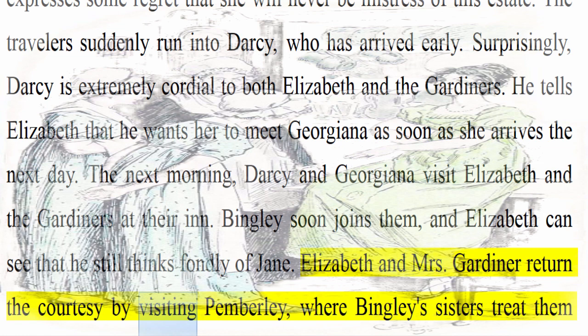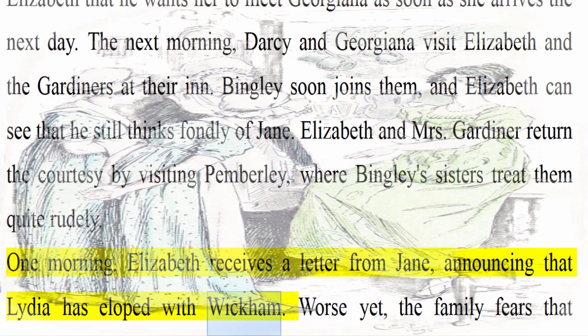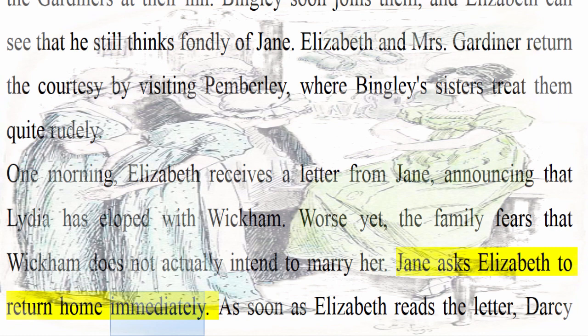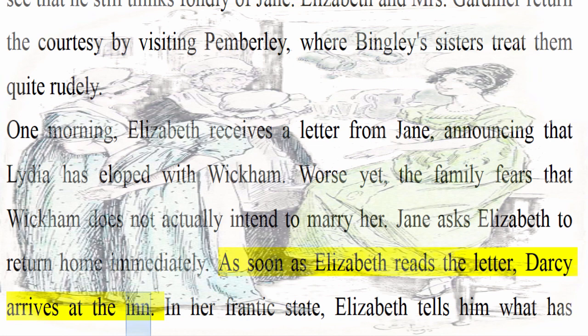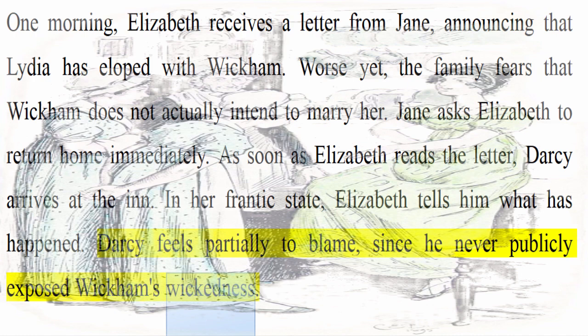One morning, Elizabeth receives a letter from Jane announcing that Lydia has eloped with Wickham. Worse yet, the family fears that Wickham does not actually intend to marry her. Jane asks Elizabeth to return home immediately. As soon as Elizabeth reads the letter, Darcy arrives at the inn. In her frantic state, Elizabeth tells him what has happened. Darcy feels partially to blame, since he never publicly exposed Wickham's wickedness.